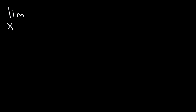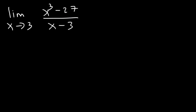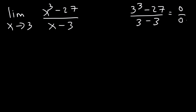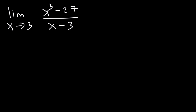Evaluate the limit as x approaches 3 of x cubed minus 27 divided by x minus 3. Now we can't use direct substitution. If we plug in 3, this will give us 0 divided by 0, which is indeterminate and we can't find the value of that. So instead, let's plug in numbers that are very close to 3.